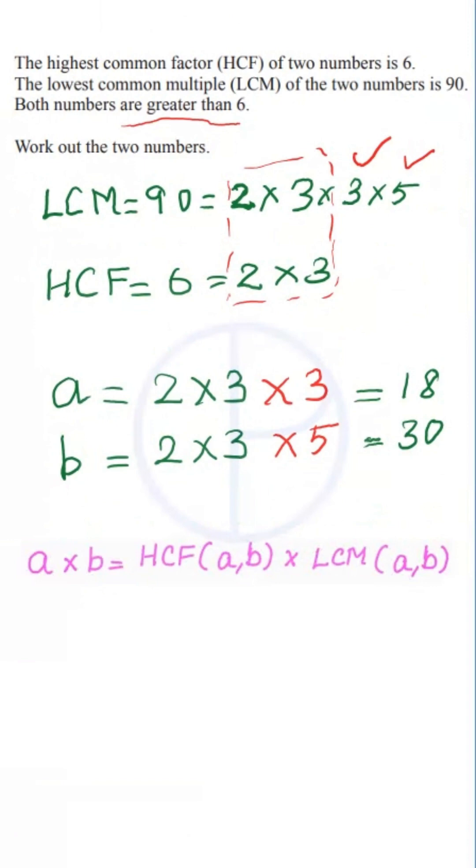How to cross check this? Do you know the relationship between HCF and LCM? The product of two numbers is equal to the product of their HCF and LCM. So the product of two numbers is 18 times 30 which is equal to 540, and the product of their LCM and HCF is 90 times 6 which is equal to 540. So the two numbers are satisfying the formula, so the two numbers are 18 and 30.